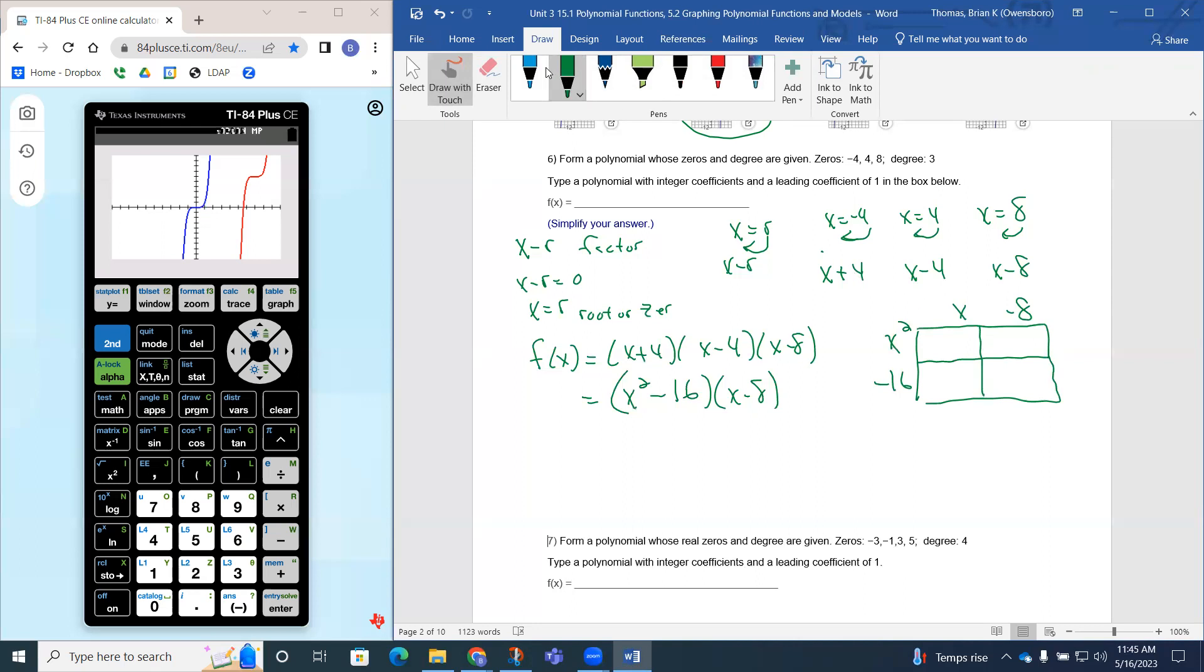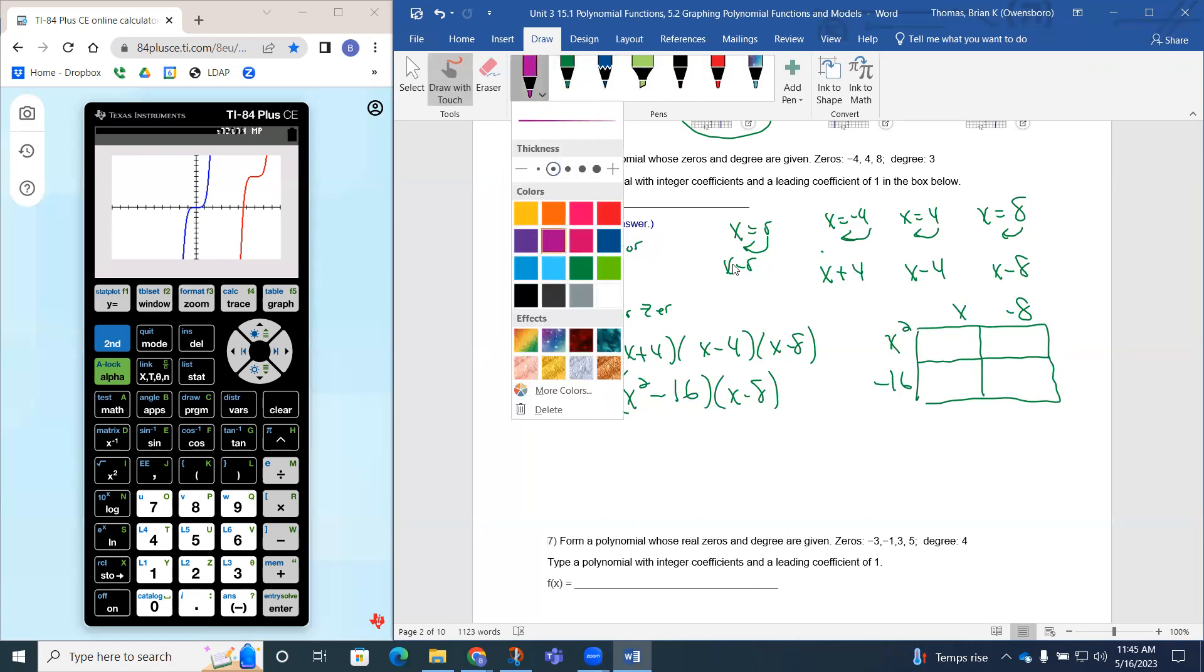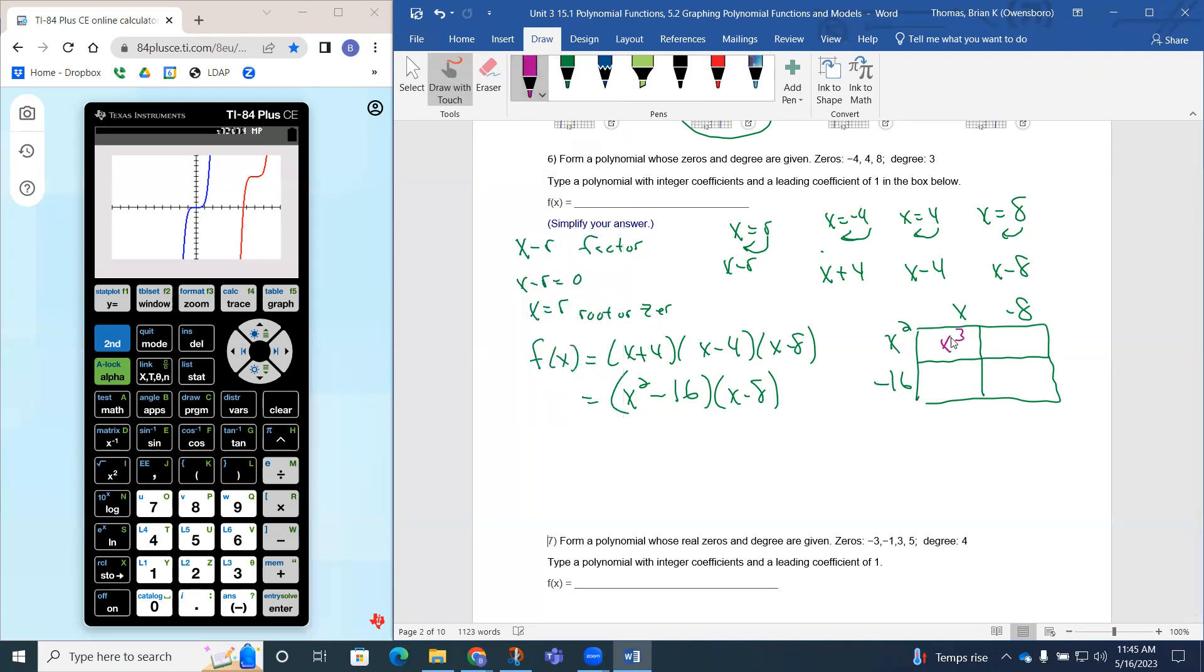So then if I just do the math, we can see x squared times x is going to be x cubed. x squared times negative eight is going to be negative eight x squared. Next, negative 16 times x is going to be negative 16x. And then negative 16 times negative eight. Let's just do that on a calculator. So 16 times eight. One twenty eight. And we do know that a negative times negative is a positive. So one twenty eight would be here.